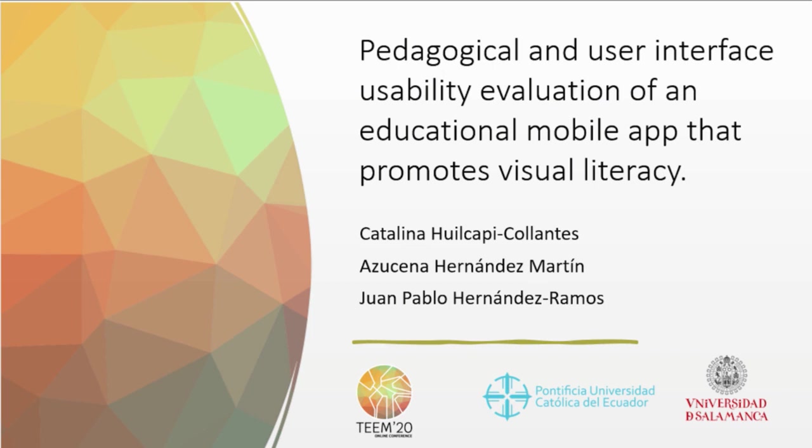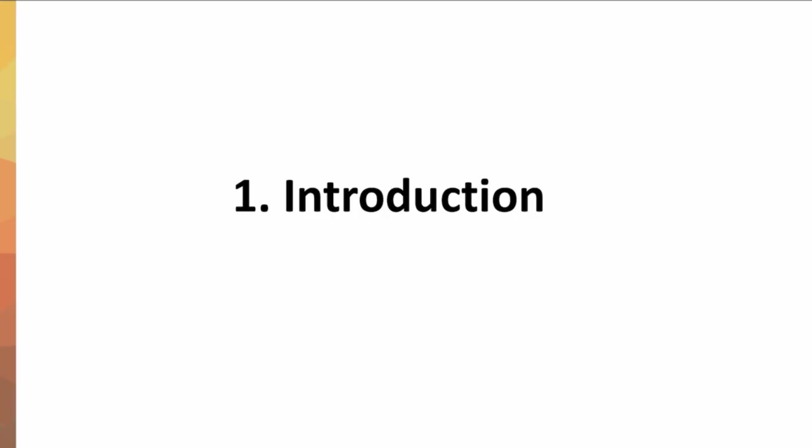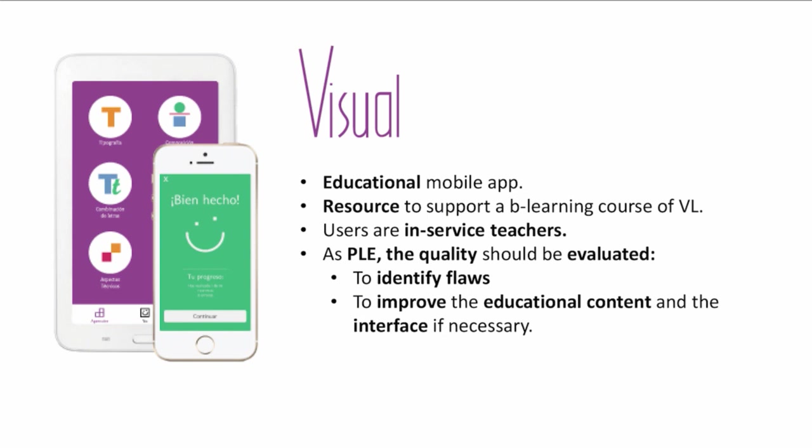Visual is a mobile app designed and developed to use as a resource to support a fluent learning course of visual literacy for in-service teachers. As a personal learning environment, the quality of this resource should be evaluated to identify flaws and to improve the educational content and the interface if necessary.